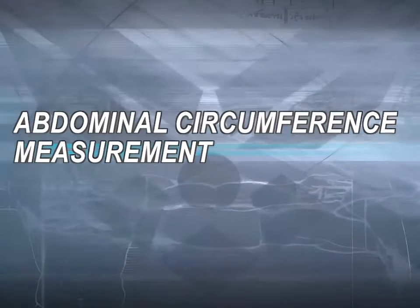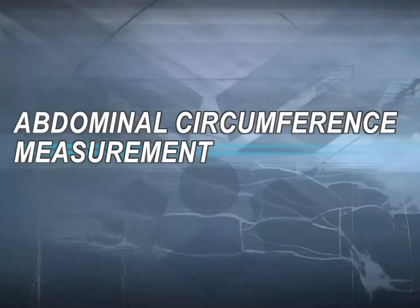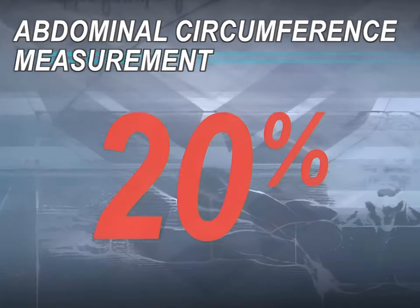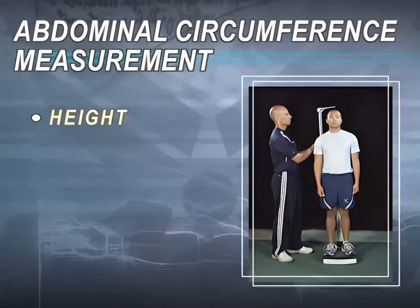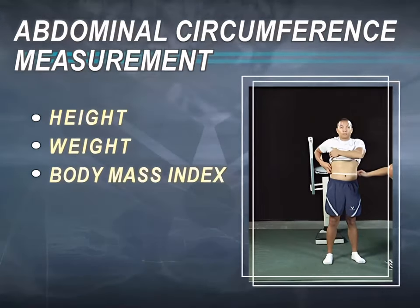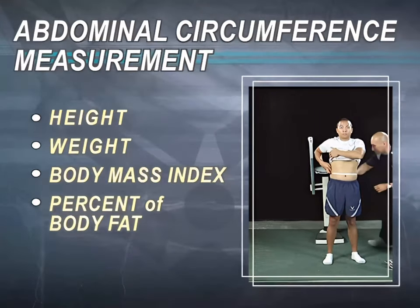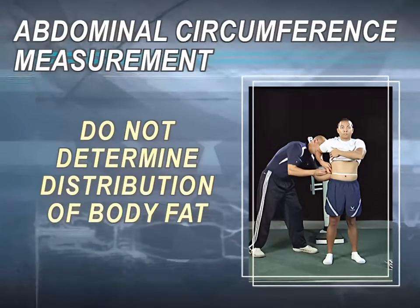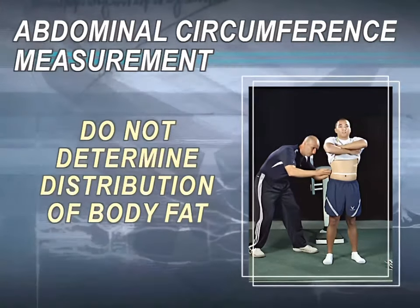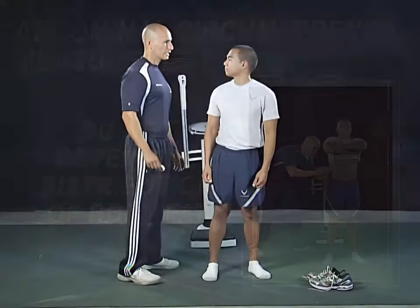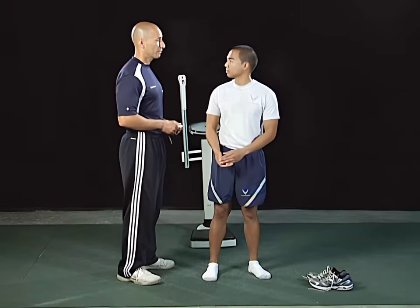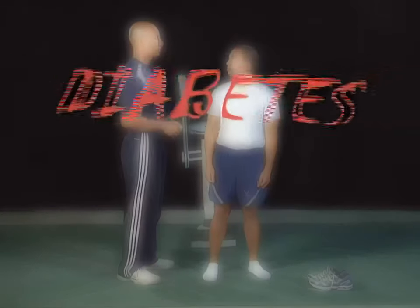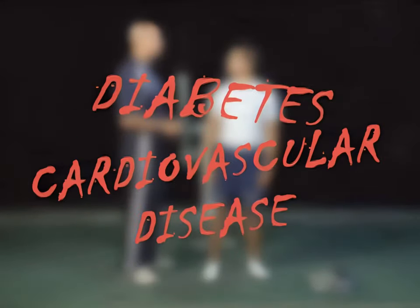The abdominal circumference measurement is an assessment of body composition and counts for 20% of your overall composite score. Height, weight, body mass index, and percent body fat provide body composition information, but they do not determine body fat distribution or regional body fat. Visceral fat, or fat stored in the internal abdominal region, is highly related to several health problems such as diabetes and cardiovascular disease.